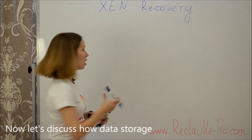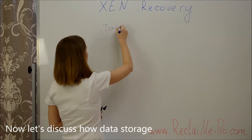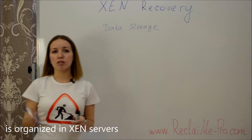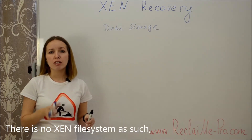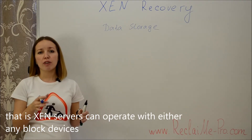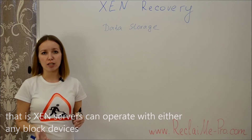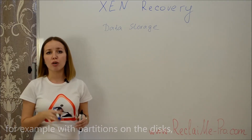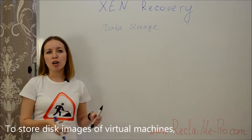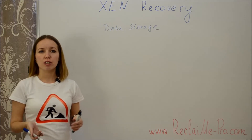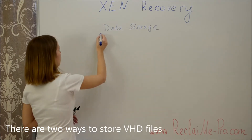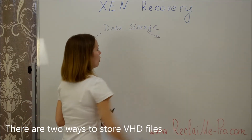Let's discuss how data storage is organized in Xen servers. There is no Xen file system as such. Xen servers can operate with either any block devices, for example partitions on the disks, or with a host file system. To store disk images of virtual machines, Xen uses VHD format. There are two ways to store VHD files.